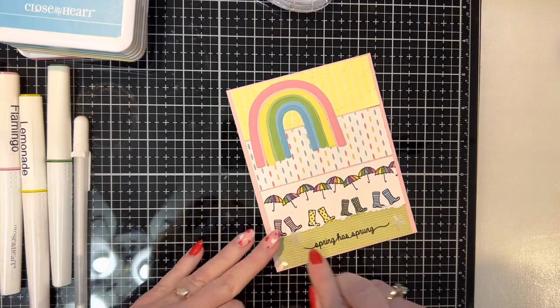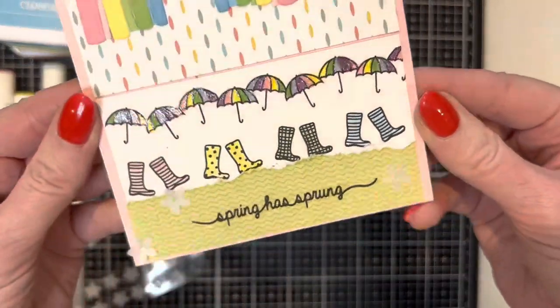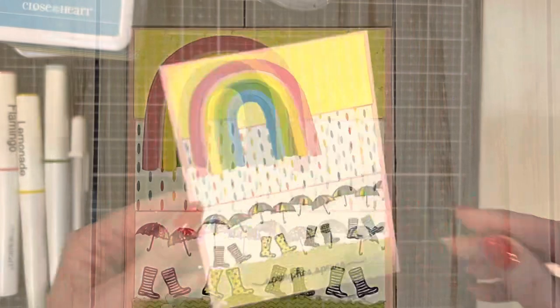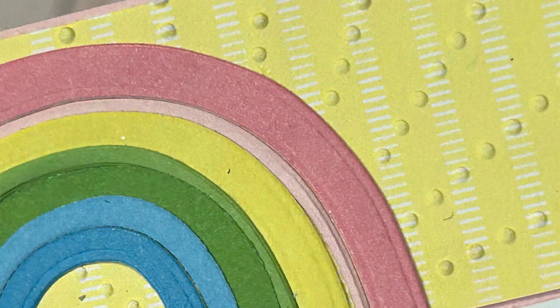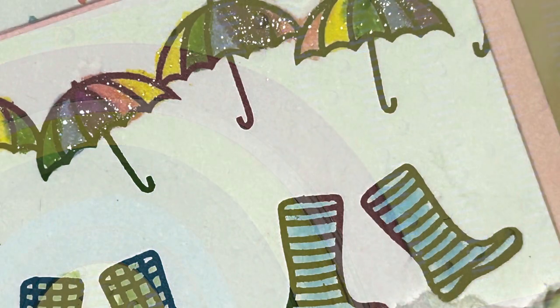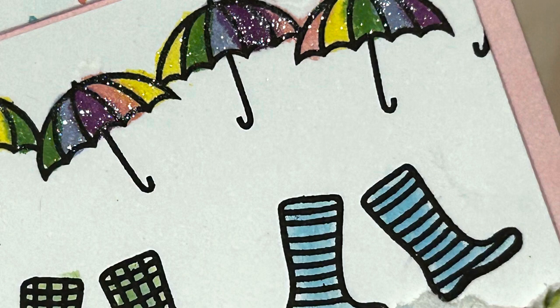The last little thing that I'm doing is adding some little white flower sequins down to that bottom area. Here's a few close-up pictures so you can see some of the details that are on the card, and I hope you've enjoyed this one.